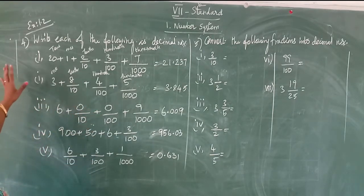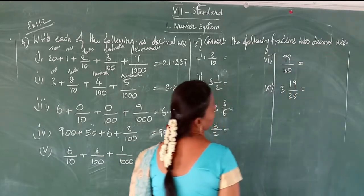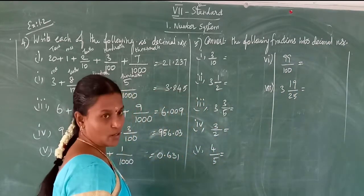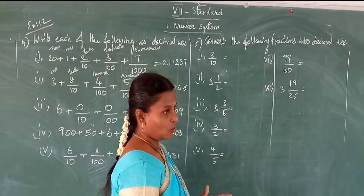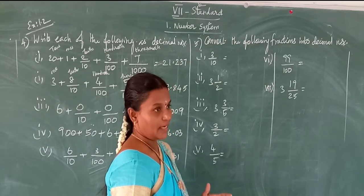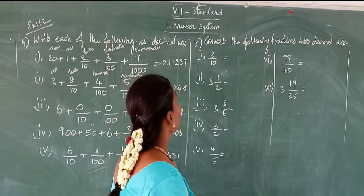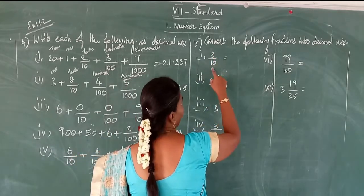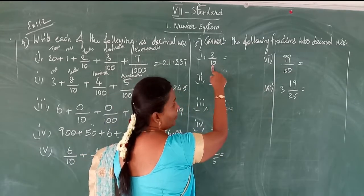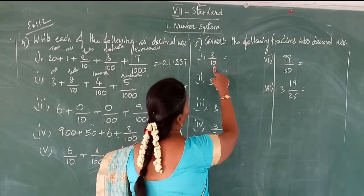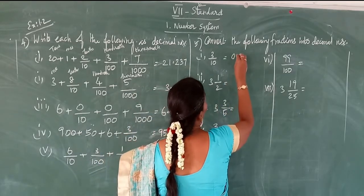Now see the fifth question: convert the following fractions into decimal numbers. A decimal number is a fraction whose denominators are 10, 100, 1000, etc. — powers of 10. See: 3 by 10. The denominator is 10, so only one zero — we need only one decimal place. So 0.3.